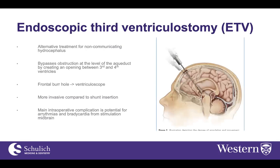Endoscopic third ventriculostomy is an alternative option for managing hydrocephalus. The procedure involves creating a bypass between the third and fourth ventricles, performed entirely endoscopically through a frontal burr hole. A ventricular scope is inserted and an opening is created in the floor of the third ventricle communicating with the fourth ventricle.